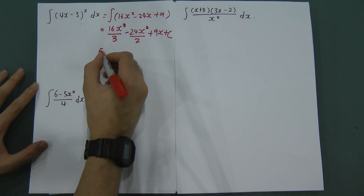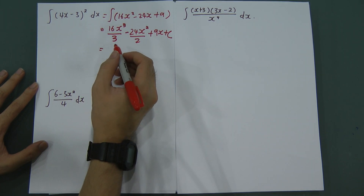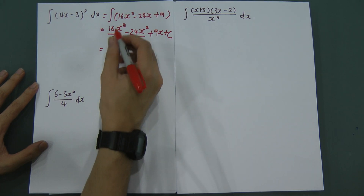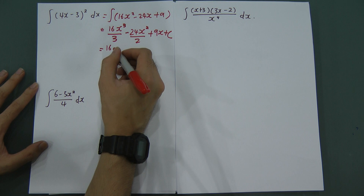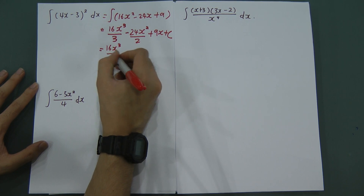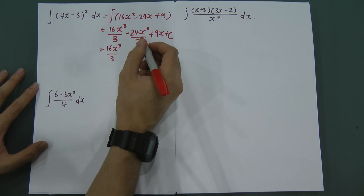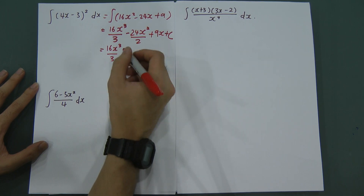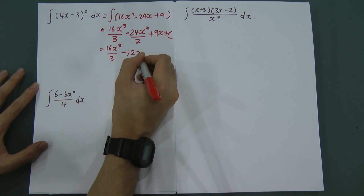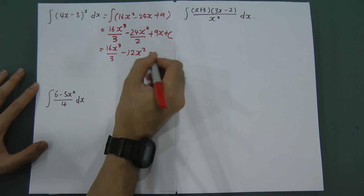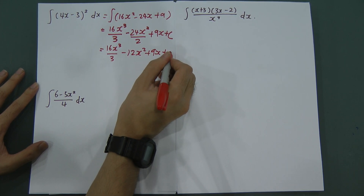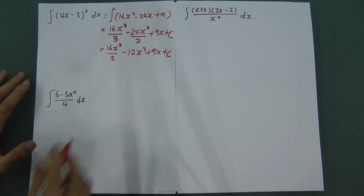Now simplify: 16x³ divided by 3 cannot be simplified so leave it. The second term simplifies by dividing by 2, giving minus 12x². So the final answer is 16x³/3 minus 12x² plus 9x plus C.